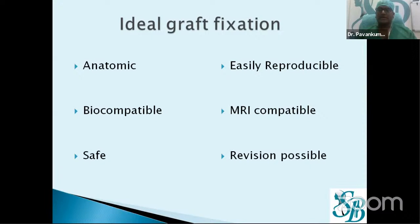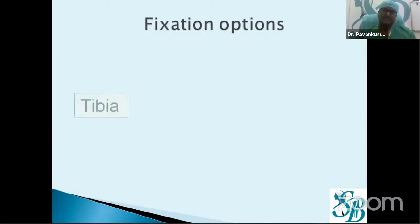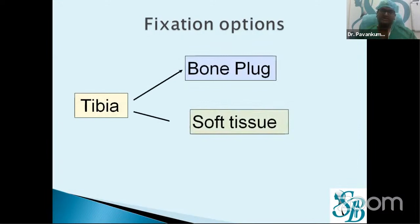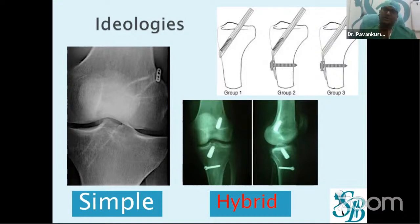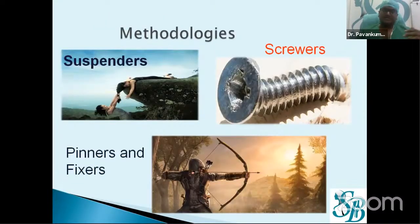Looking at fixation options for the tibial side, we can think in terms of bone, blood, or soft tissue fixation. Broadly, you can classify fixations as simple — using just one modality on the femur and one on the tibia — or hybrid, where more than one fixation modality is used to fix the graft on the tibial or femoral side. This simple versus hybrid concept is the broad framework for thinking about these methodologies.